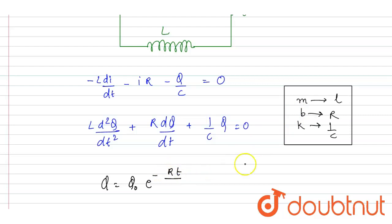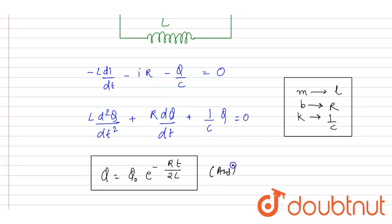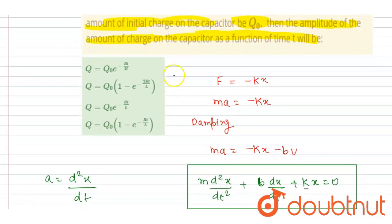By 2, M is to be replaced by L. So this will be the function of the charge on the capacitor at any time. Now you can check for the option. So here A will be the correct option. Thank you.